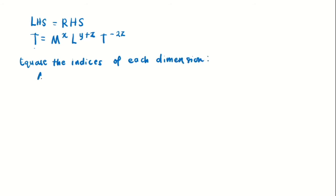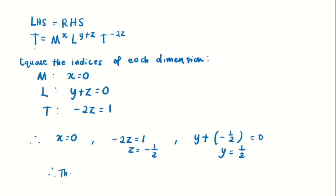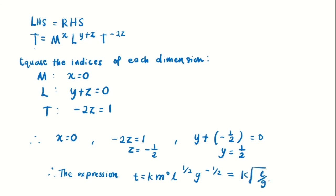Equating the indices of each dimension: for M, x equals 0; for L, y plus z equals 0; and for T, negative 2z equals 1. Solving: x equals 0, z equals negative one-half, and substituting z into y plus z equals 0 gives y equals one-half. Hence the final expression for period is T equals k times m to the power of 0, l to the power of one-half, and g to the power of negative one-half — which simplifies to T equals k times the square root of l over g. That's all, thank you for watching.